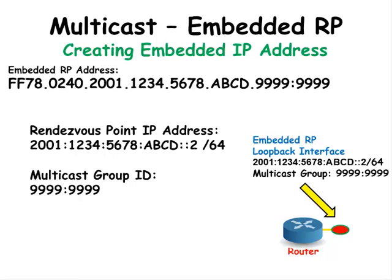Now we have completed the creation of the embedded Rendezvous Point IP address. This is the IP address that will be sent out by the multicast server and requested by the client computer. It contains the IP address of the Rendezvous Point including the prefix length, for the multicast group ID of all 9s. None of the other routers need to have this Rendezvous Point IP address statically configured on them except the Rendezvous Point itself.